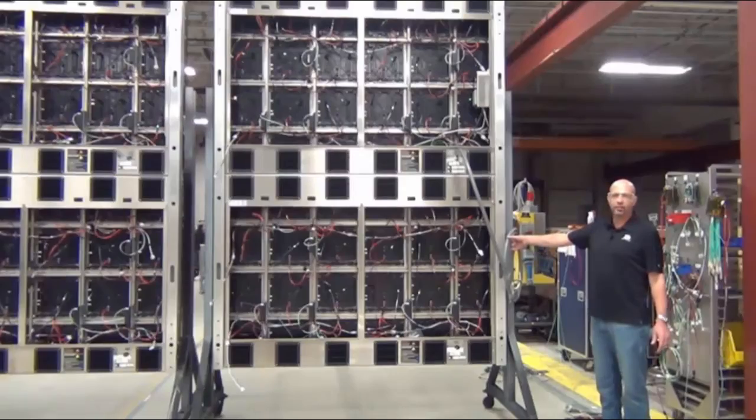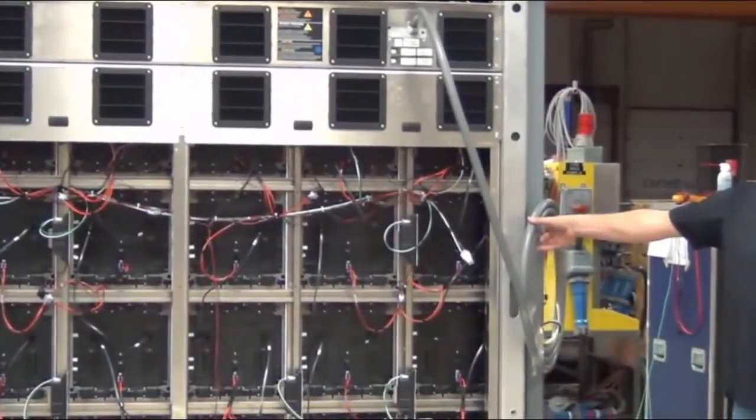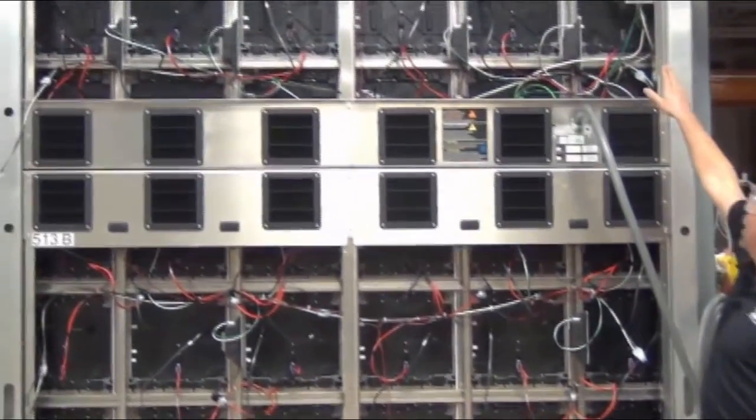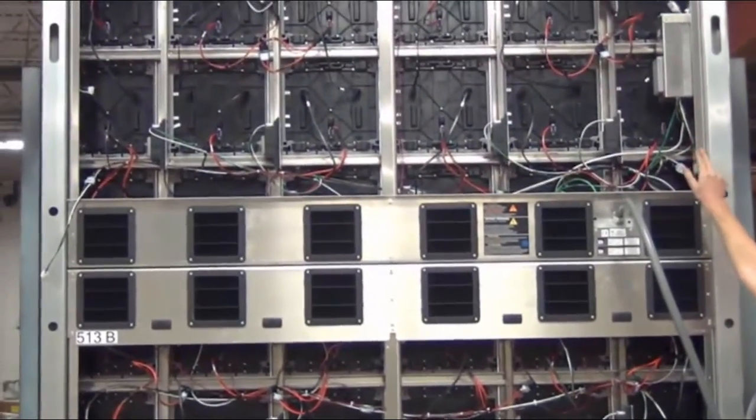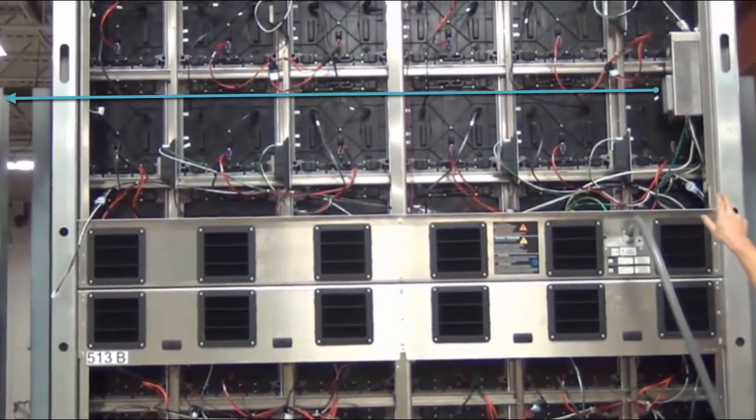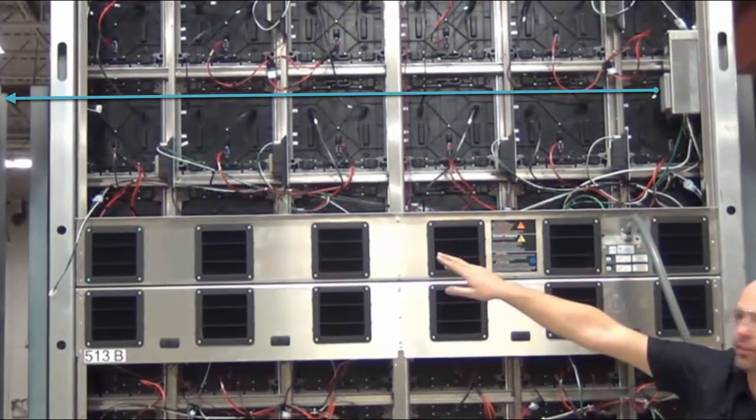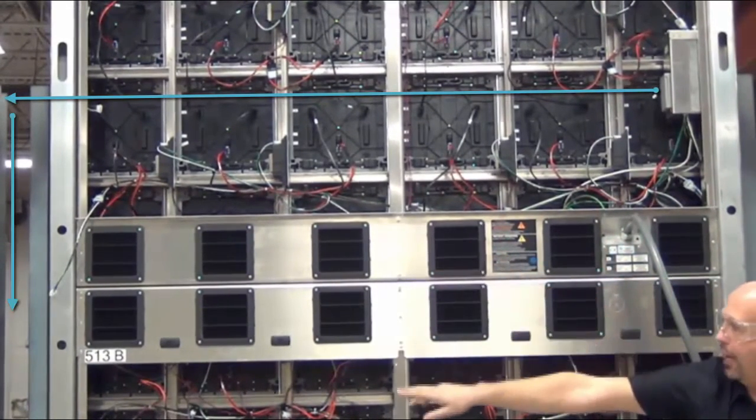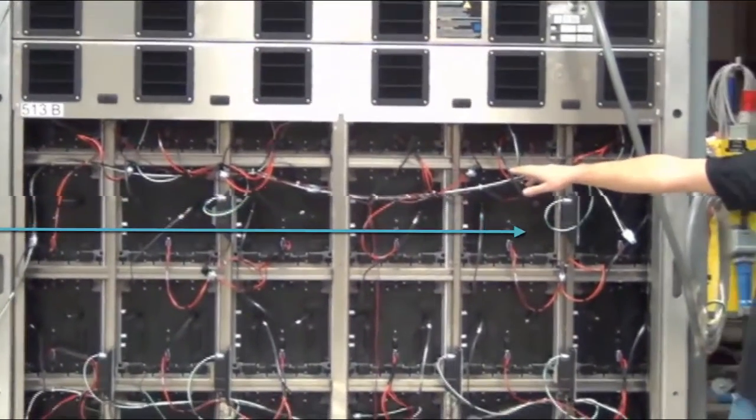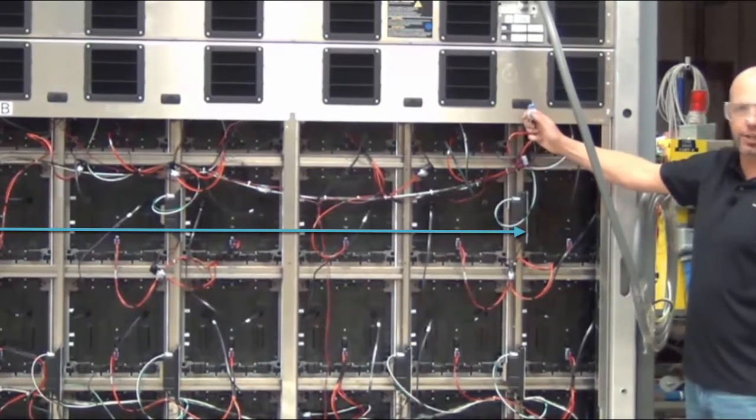This will be terminated into a junction box on the structure from the main feeder for the power. That will enter the cabinet, the top box, the silver box up there is our breakers for these two sections. Power will start at that section, go over to 514 top, they'll come down to 514B and then back across into 513B and terminate at this location.